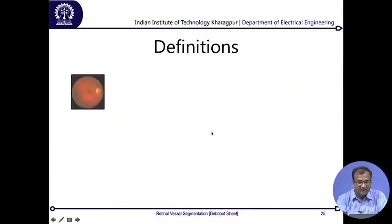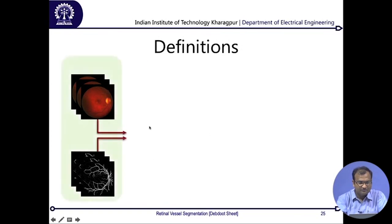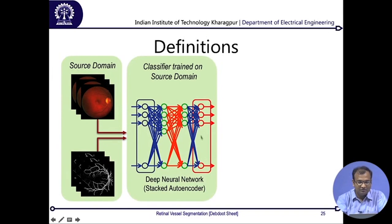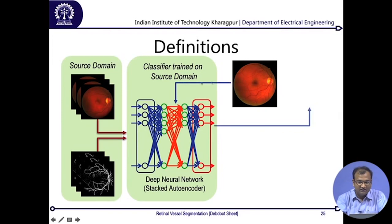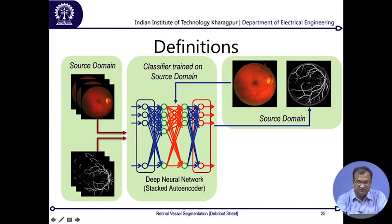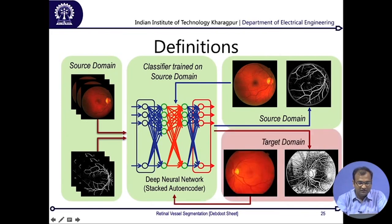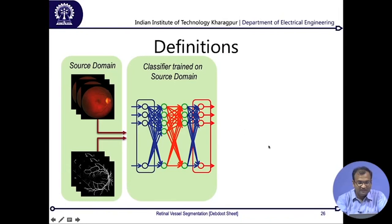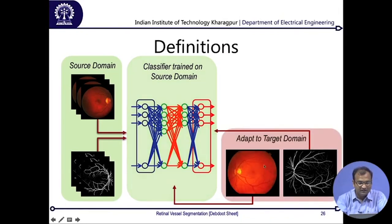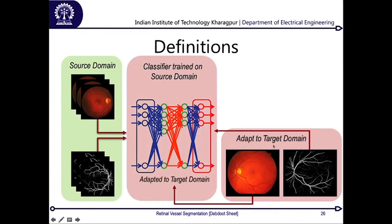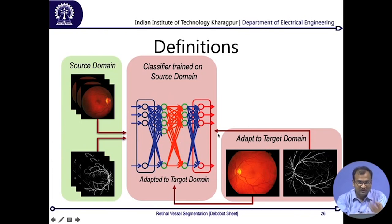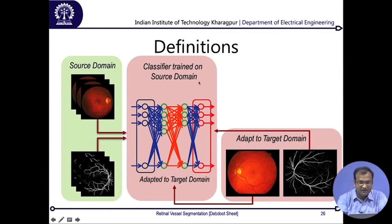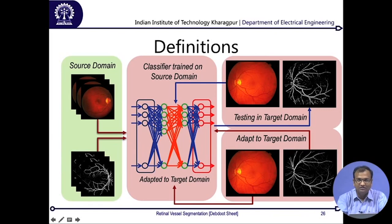What we can do is define a source domain — the images and classifier trained on that source domain — and a target domain. If we test on the same source domain we get a good result, but the moment we take a different target domain we do not. To do domain adaptation, we take images and ground truth from the target domain and feed this information via an adaptation algorithm — another level of learning algorithm — into the network, such that it gets adapted and produces accurate segmentation in the target domain as well.